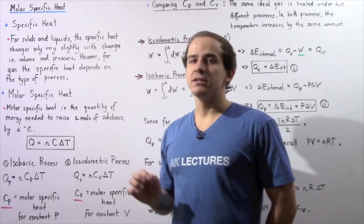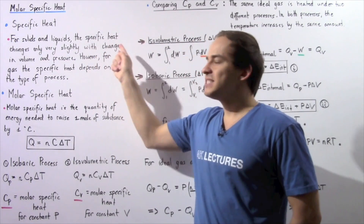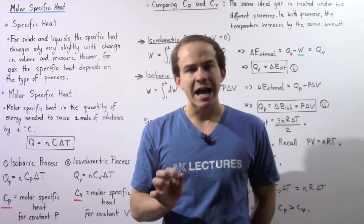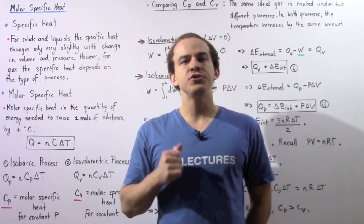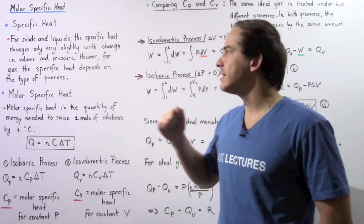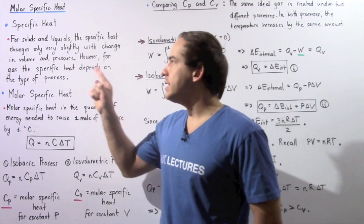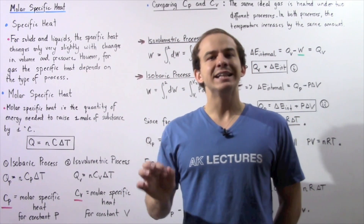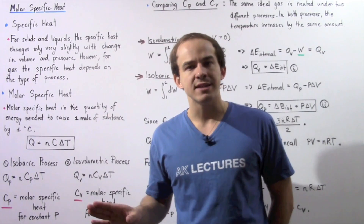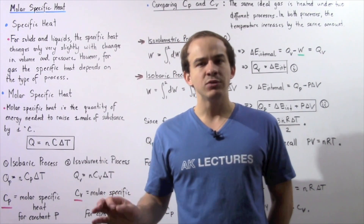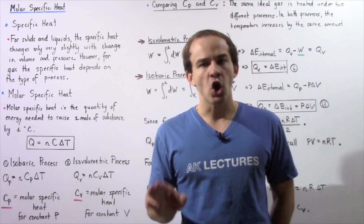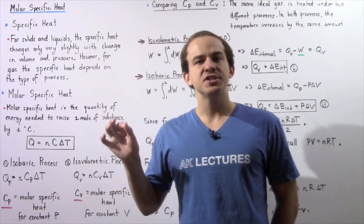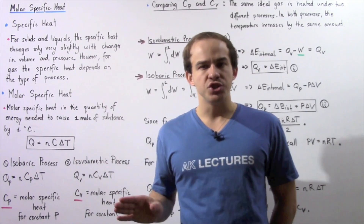For solids and liquids, the specific heat values change only very slightly with changes in pressure and volume. So that means for solids and liquids, the specific heat does not depend on the type of process that our solid or liquid is undergoing. The specific heat only depends on the type of substance that we're using.